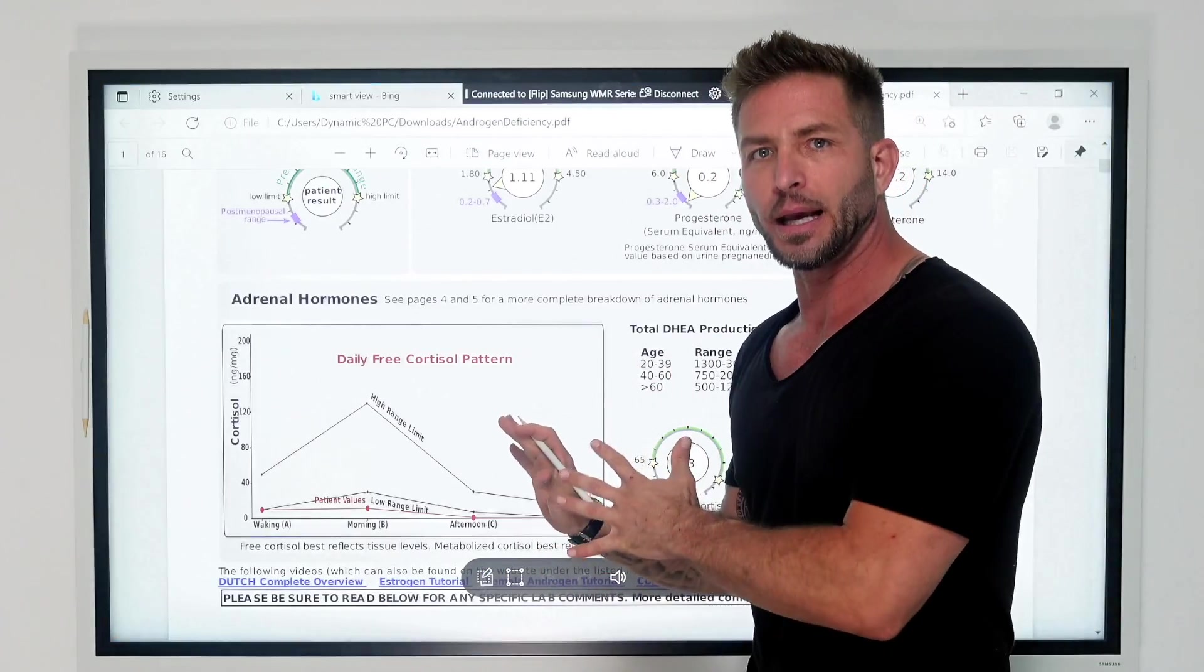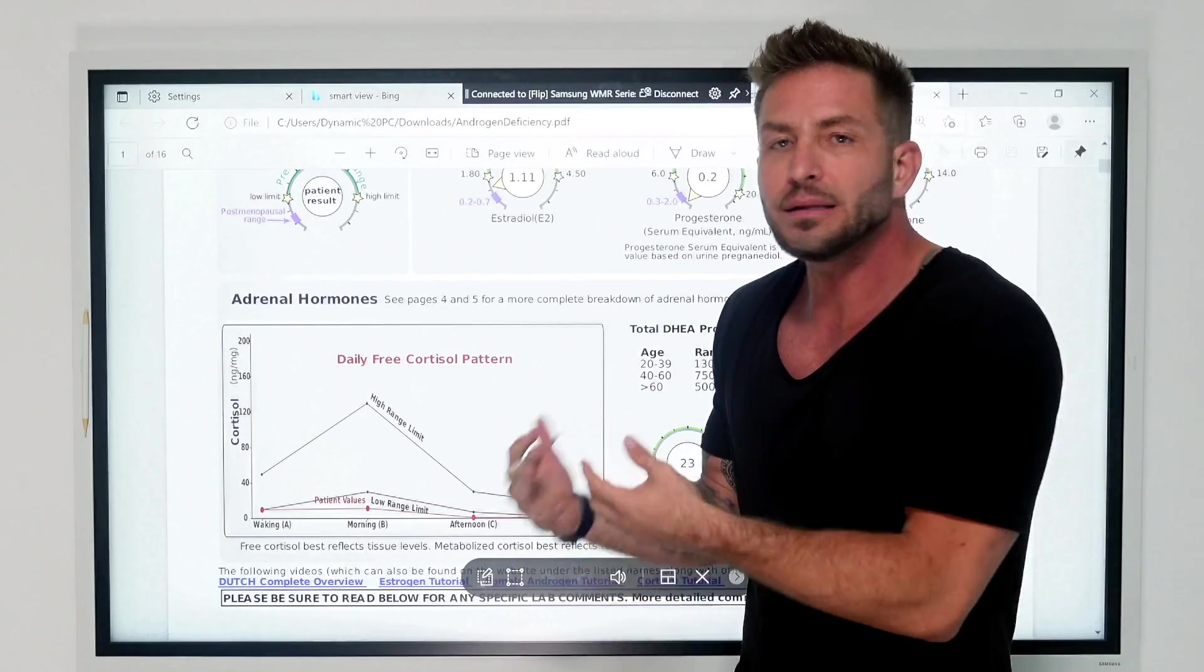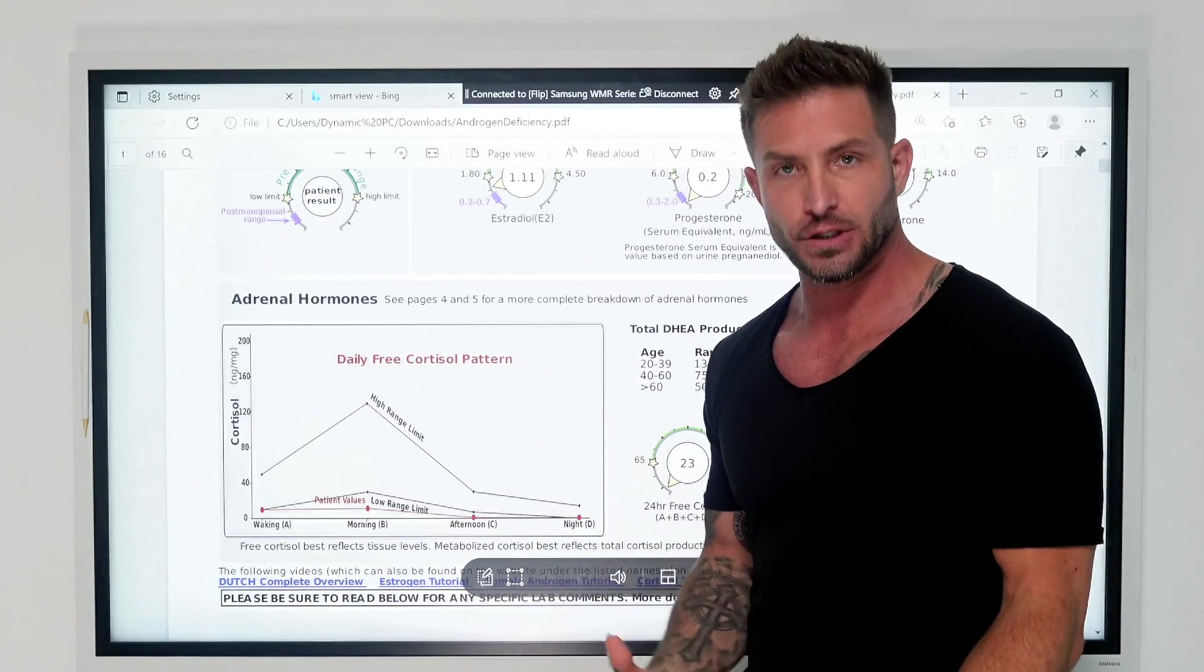And you wouldn't have learned that unless you did a Dutch test. So, again, that's one of the reasons that we have to do this so that we can identify the different metabolites. So, let's go back up and ask ourselves, well, how did this begin? How did she become androgen deficient?